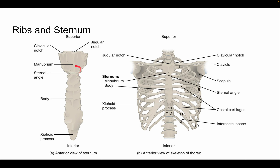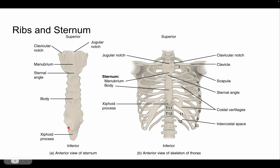Then we have the sternal angle where the manubriosternal joint is, though you don't need to know that for the skeleton portion. Then we have the body of the sternum, and this little projection pointing downward is the xiphoid process. We also have the xiphisternal joint here.